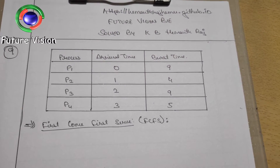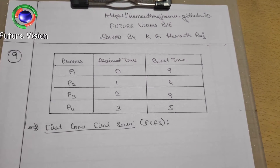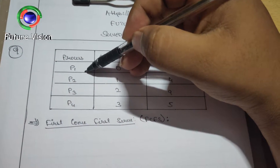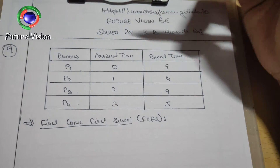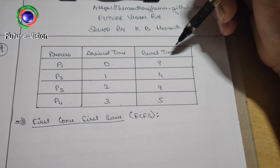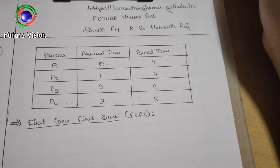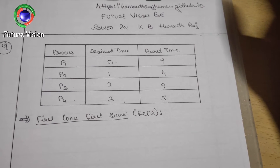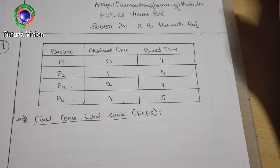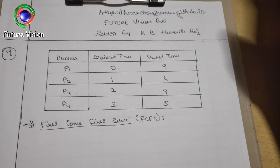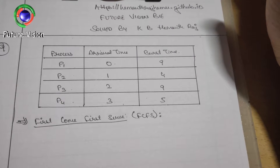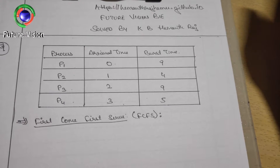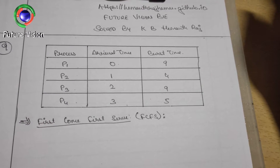Today we will be seeing First Come First Serve. In this problem we have processes P1, P2, P3, P4 with arrival times from 0 to 3 and burst times accordingly. First Come First Serve is an algorithm where the first process comes and completes its execution completely until the next process arrives in the ready queue.